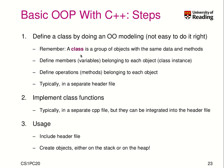A class is a group of objects with the same data and methods. You have instances of a class, and they all have the same data and methods — a class of students, a class of cars, and so on. Next, you have to define the members, which are the variables that belong to each object, which is a class instance.